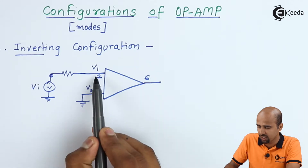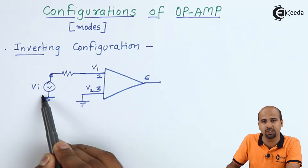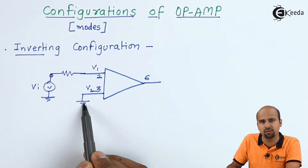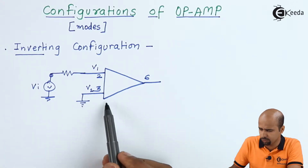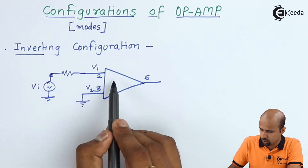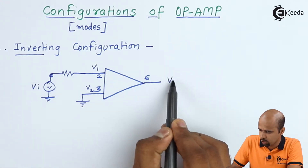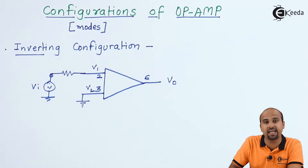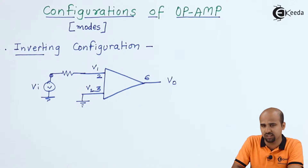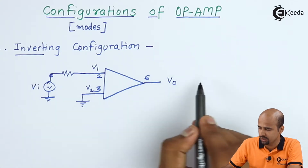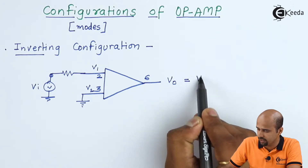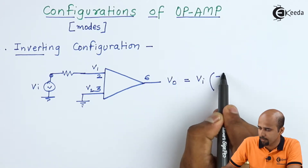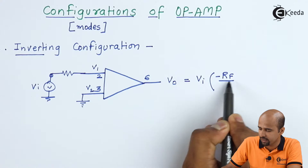Keep in mind that whenever input is applied to the second pin and the third pin is grounded through a resistor of finite or zero value, this is the inverting configuration. Whatever output we get will be amplified according to the inverting configuration. The output value is v0 equals vi multiplied by minus Rf divided by R1.